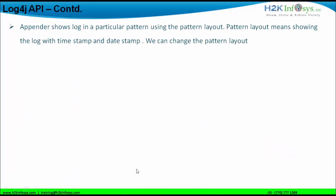The Appender shows logs in a particular pattern and for that it uses the PatternLayout class. PatternLayout shows the log information with a timestamp and date stamp. The pattern of the logs created can be changed manually, whether for logs in HTML format, R format, console format, or any other format supported by Log4j.